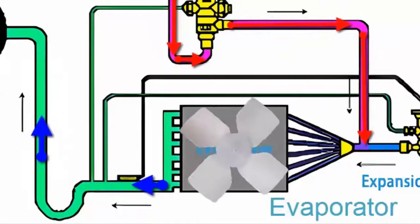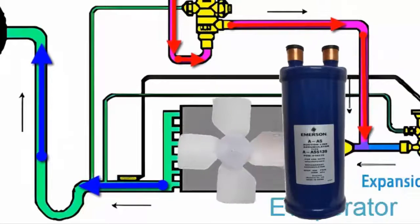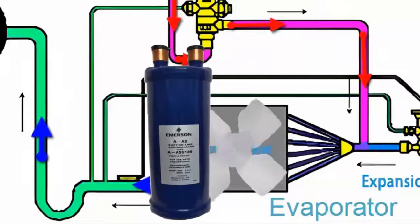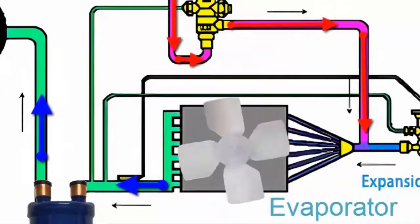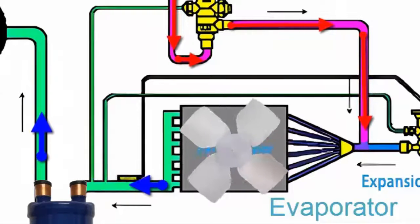To prevent this violently generated liquid from reaching the compressor directly, it is recommended to install a liquid accumulator in the suction line to act as a barrier for the liquid refrigerant.